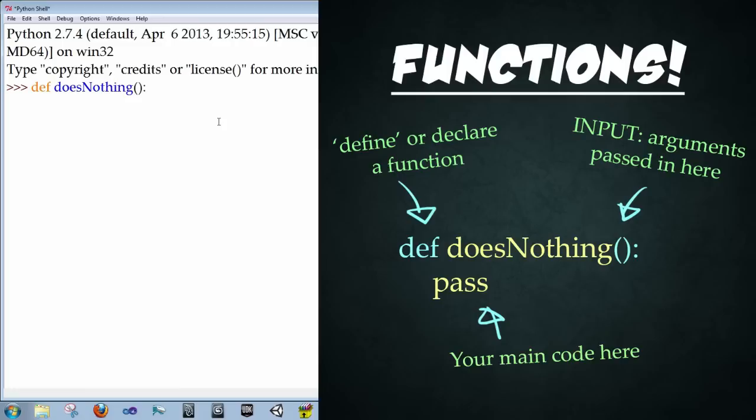And now, notice that idle automatically indents anticipating you to put some stuff into the function. And here we can put in whatever we want to execute over and over again. So for right now, just type in pass. And if you remember from earlier, pass is more of a placeholder. It doesn't actually do anything, it just tells the computer to move on. Okay, and press enter. Enter again.